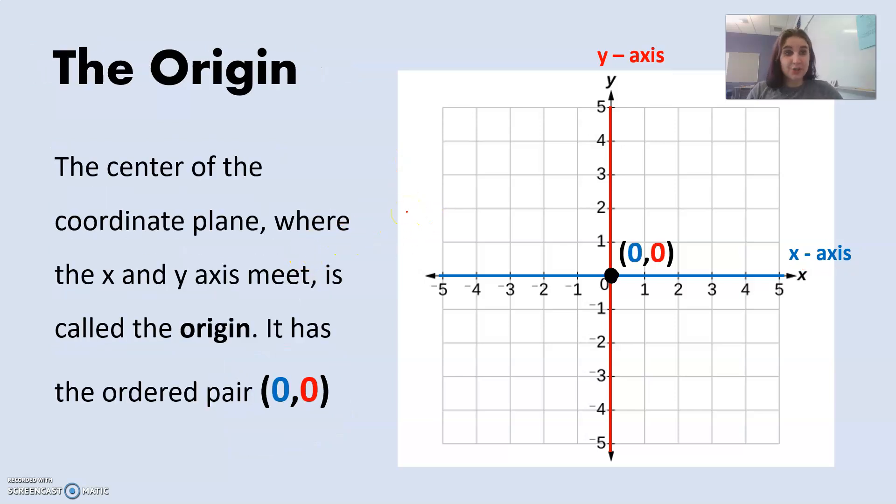One special ordered pair is the origin. The origin is the center of the coordinate plane, it's the very middle, zero, zero. This is where the x and y-axis meet. It's called the origin. It has the ordered pair (0,0). So this is when x is zero, and when y is zero. So it's right in the middle where these two axes meet each other, the origin.